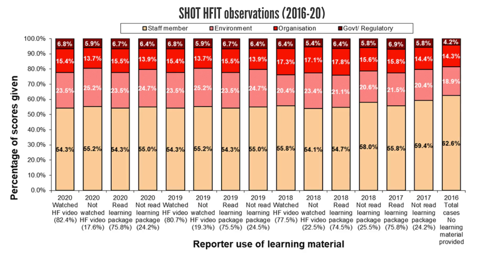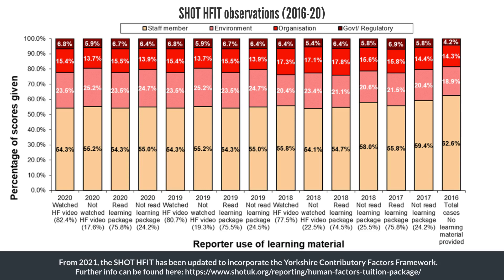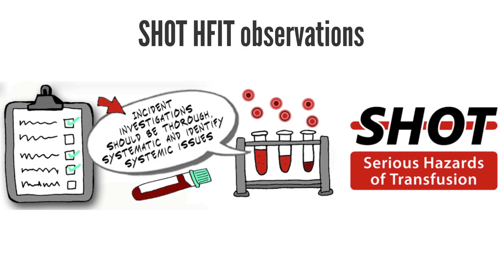Over the four years of this study there has not been a major change in the distribution of scores given to the four human factors, although the trend across the three years is to assign slightly less responsibility to the staff members, especially if the educational material has been used. This reminds us that incident investigation should be thorough, systematic, and identify systemic issues.